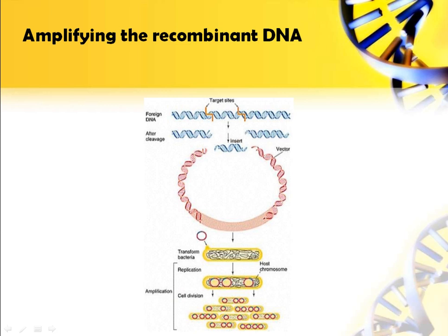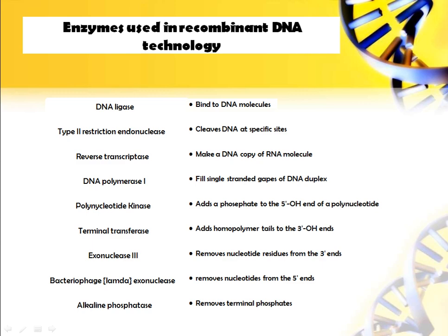Different enzymes used in rDNA technology: ligase is used to join DNA molecules. Type II restriction endonuclease is used to cleave at specific sites. Reverse transcriptase is used to make a copy of an RNA molecule. DNA polymerase I fills single-strand gaps in a DNA duplex. Polynucleotide kinase adds a phosphate to the 5'-hydroxy end. Terminal transferase adds a homopolymer tail at the 3'-hydroxy end. Exonuclease III removes nucleotide residues from the 3' end. Bacteriophage exonuclease removes nucleotides from the 5' end. Alkaline phosphatase removes terminal phosphate groups.